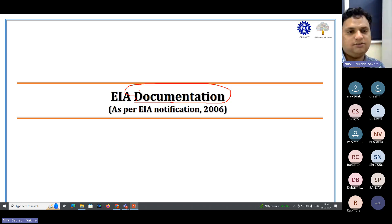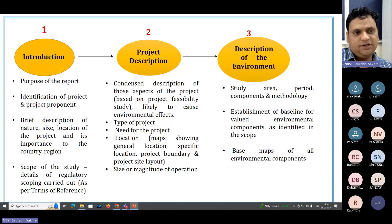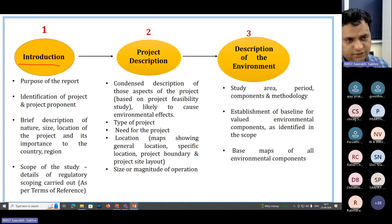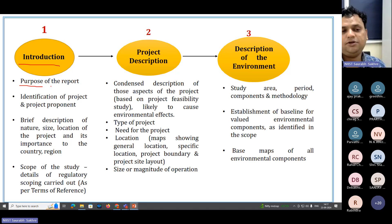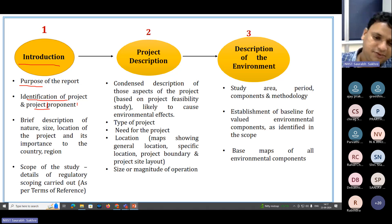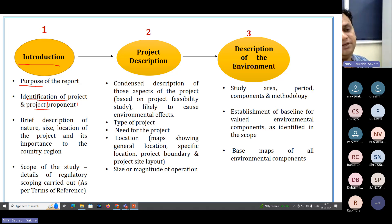Now we will see the documentation. When doing documentation for EIA, you first start with the introduction — Chapter 1. You have to mention the purpose of the report, why you are preparing it, and then the identification of the project and project proponent. Proponent means for whom you are doing it, such as NTPC or any government department or private company.